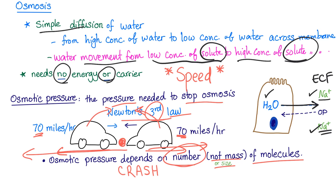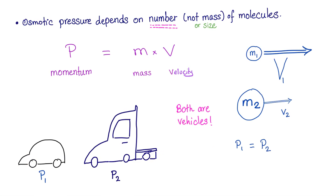Now, the osmotic pressure depends on the number of molecules. Not the mass, not the size of molecules. The number. Why is that? It's complicated. With medicosis, it's going to be easy. Osmotic pressure depends on the number.